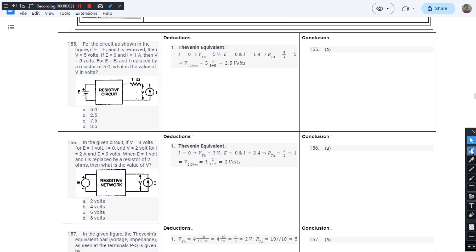This is question number 155 from chapter 1 of J.B. Gupta's book. The question goes like this: for the circuit as shown in the figure, if E equals E1 and I is removed—when we say that a current source is being removed we are talking about an open circuit—then V equals 5 volts. This is the first statement.